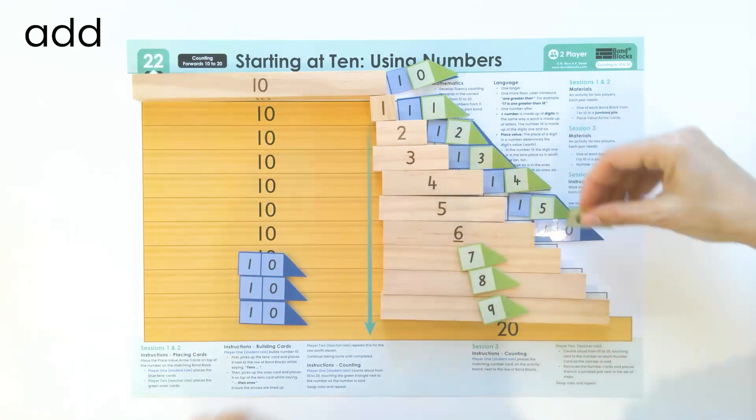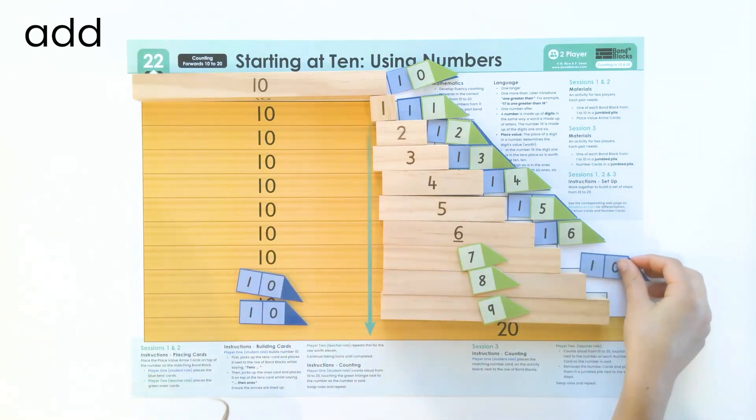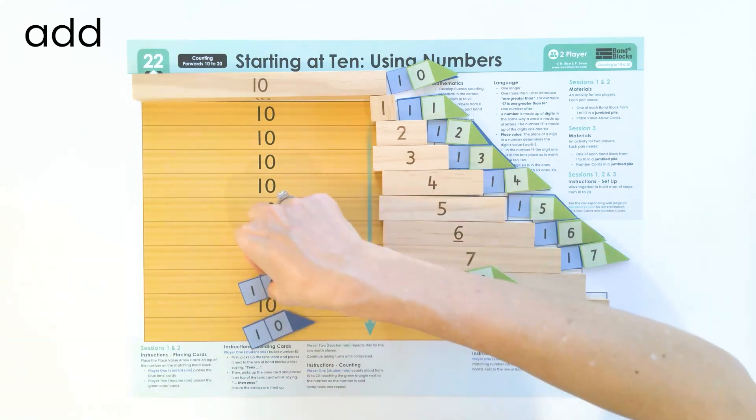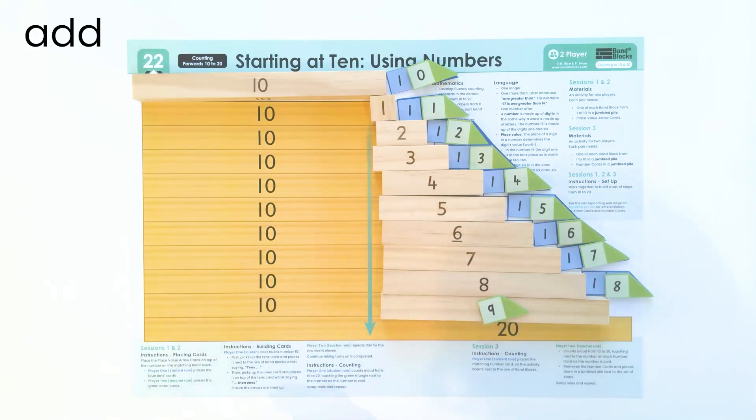Ten, add six is sixteen. Ten. Well done. Add seven is seventeen. Ten, add eight is eighteen. Ten, add nine is nineteen. Well done.